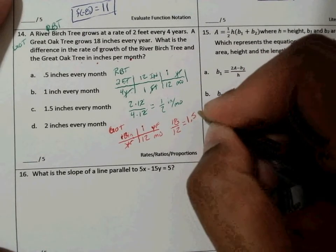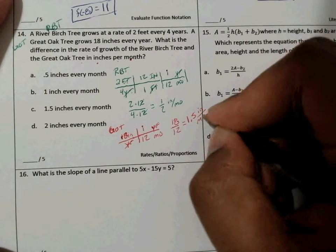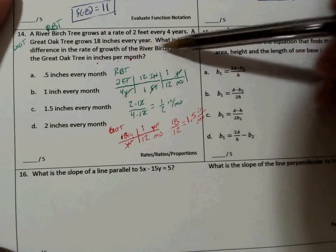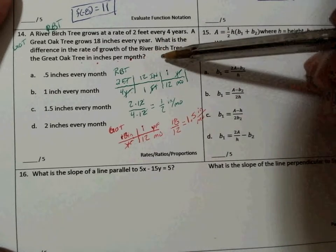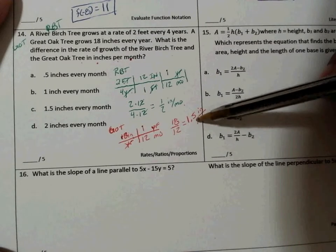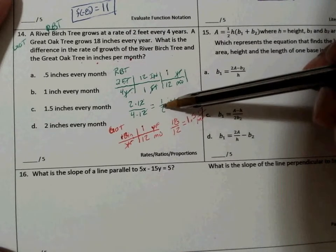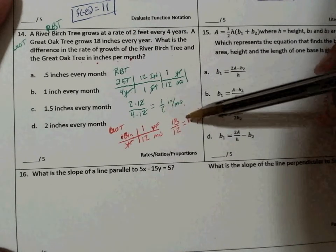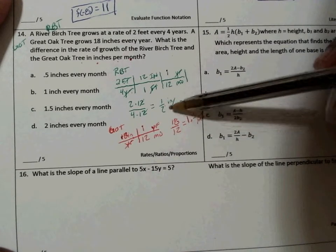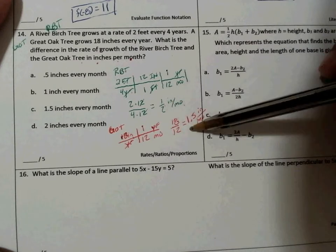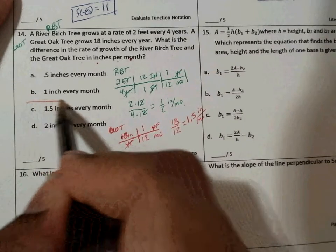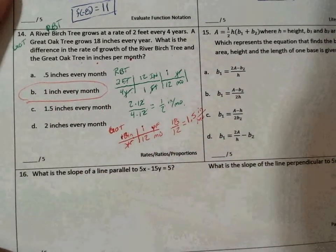The question said what is the difference in the rate of growth of the river birch tree and the great oak tree. So this is my river birch and this is my great oak. So I subtract the two: 1/2 is the same thing as 0.5. 1.5 minus 0.5 is 1. Think of this as 50 cents: 150 minus 50 cents is a dollar. So it's 1 inch every month.